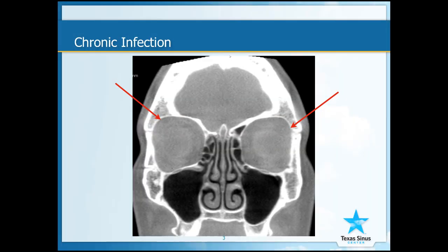In this CT scan, taken looking directly at the patient's face, the red arrows represent the eyes. These red arrows represent the nose. This red line down the middle is the septum, which should be straight like this. And these two red arrows represent the cheek sinuses, which are black and full of air — the way the sinuses should look.